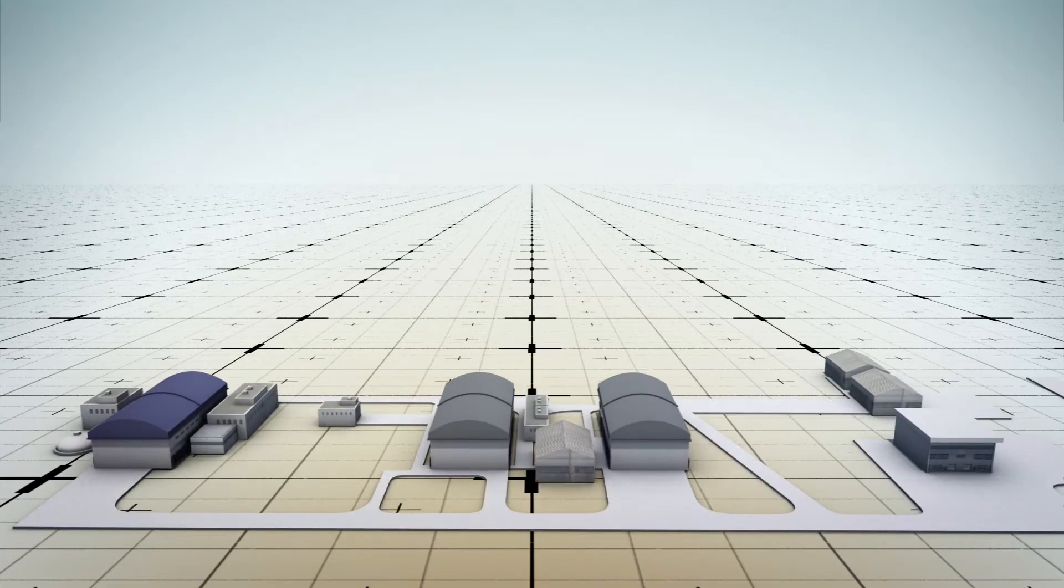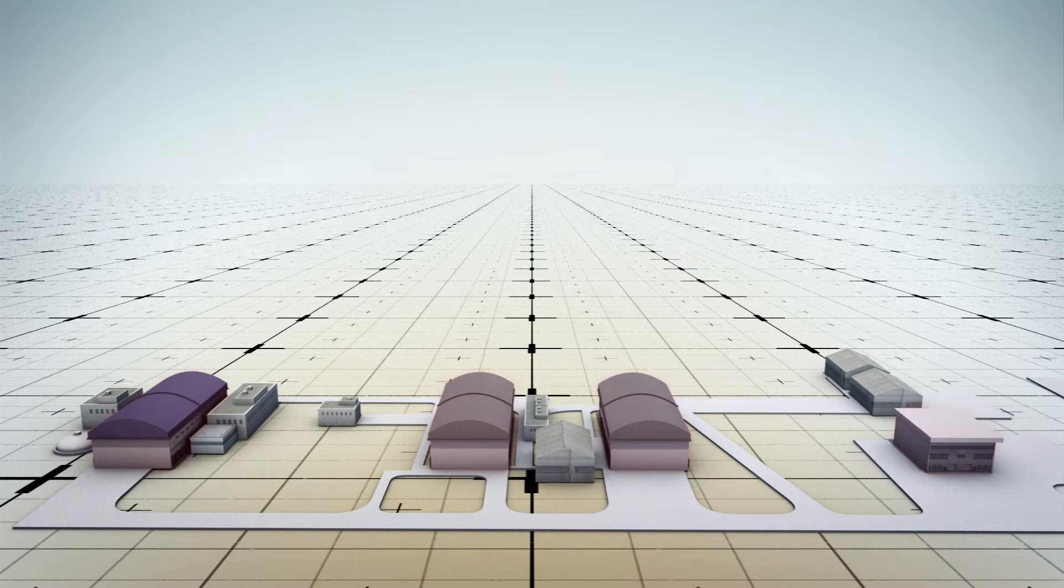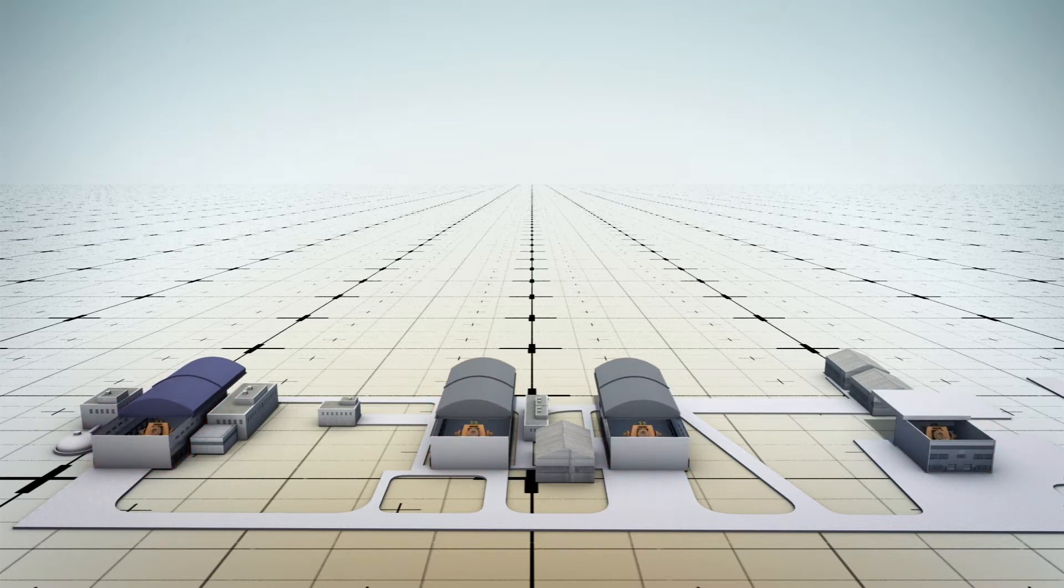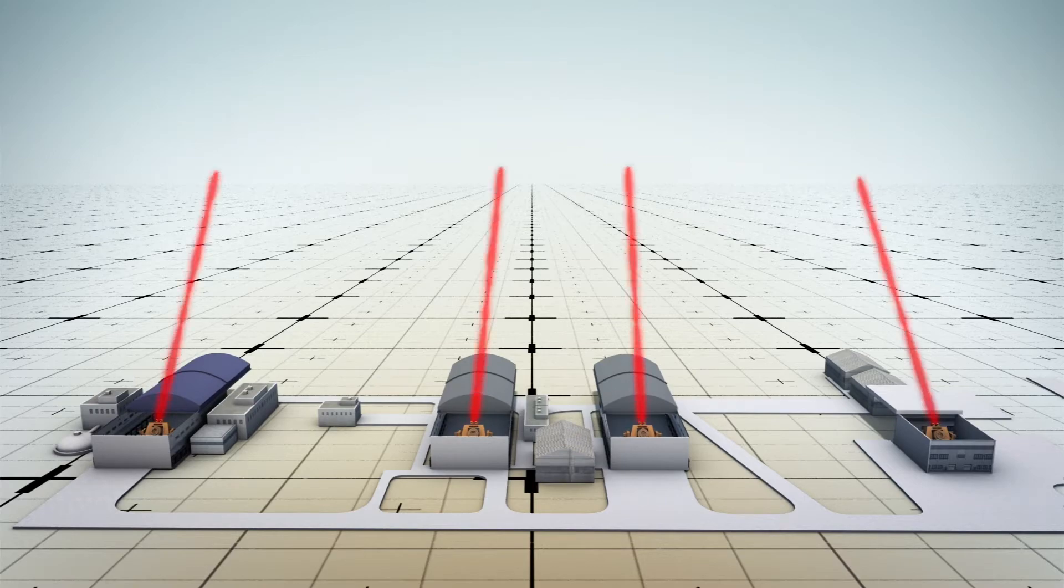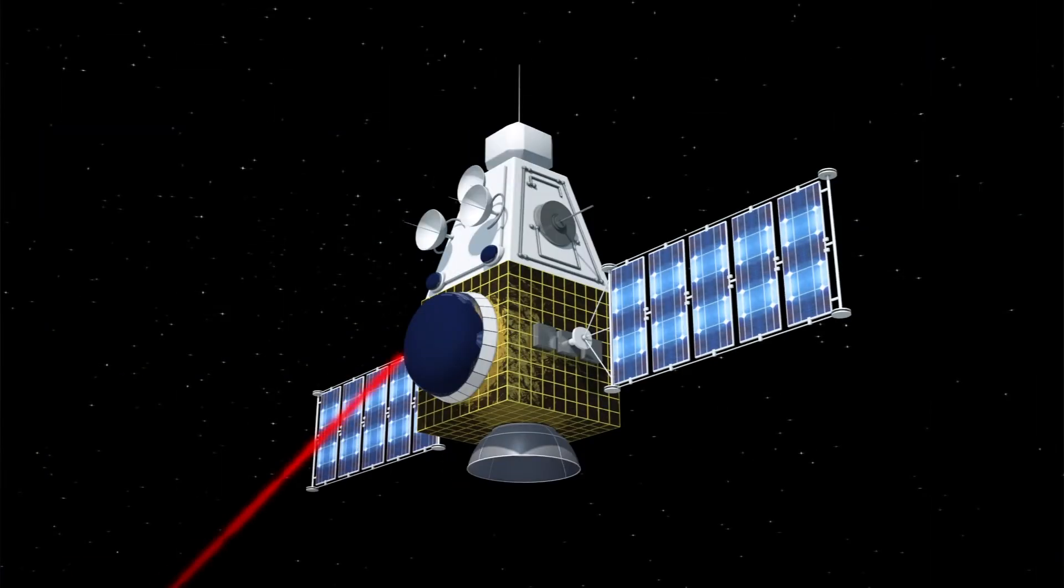The pictures show a directed energy weapons facility, also known as a DEW. According to Bhatt, the facility is made up of four buildings with sliding roofs. Bhatt believes that the buildings contain chemical lasers that can be used to disable satellites.